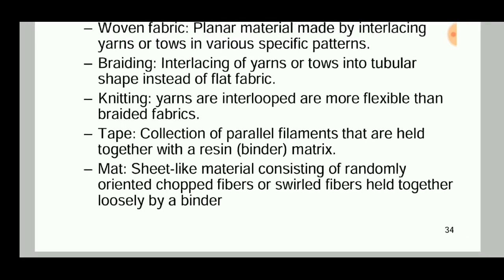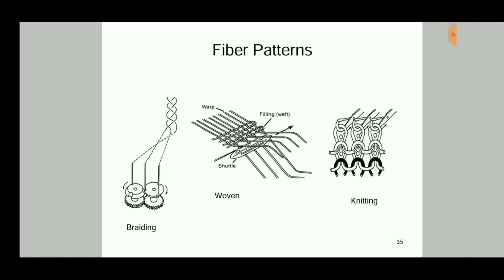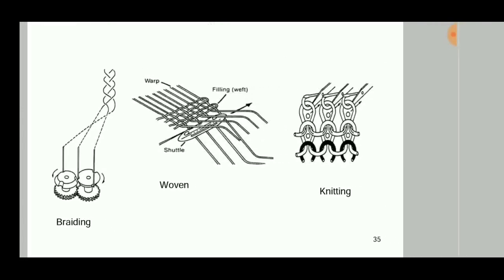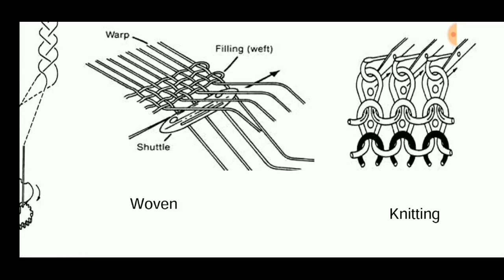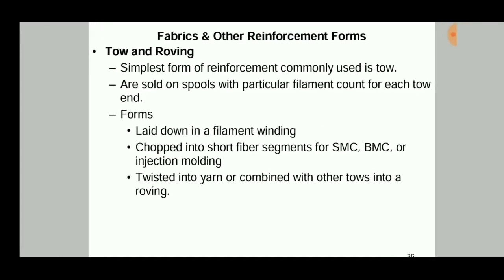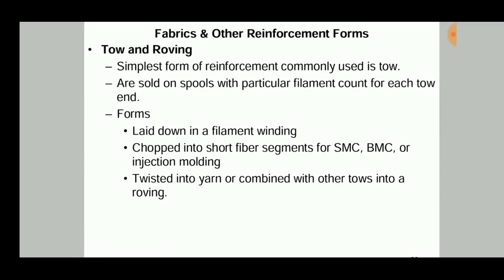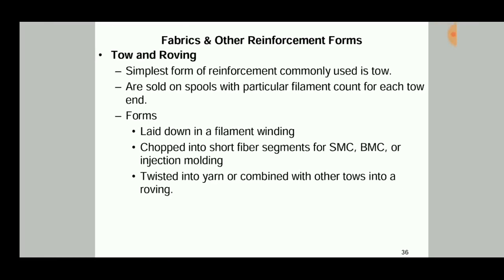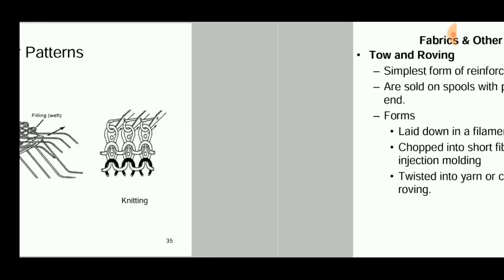A mat is a sheet-like material consisting of randomly oriented chopped or swirled fibers held together loosely by a binder. These are all the processes — braiding for making tubular shapes, bidirectional woven roving of filaments or fibers, knitting process, and fabrics. Tow and roving are the simplest forms of reinforcement, sold in spools. They can be used for filament winding, chopped into short fiber segments, twisted into yarn, or combined with other tows into a roving.